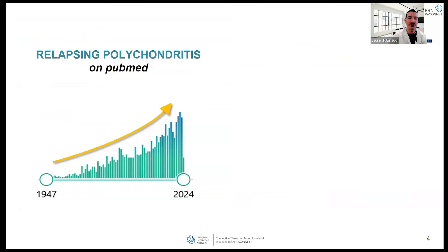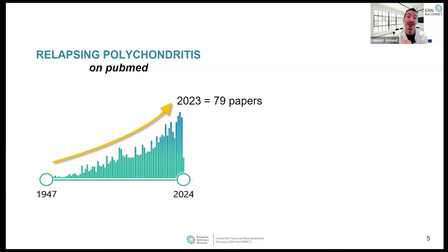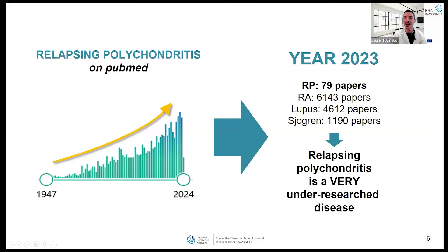Relapsing polychondritis is a very rare and very under-researched area. The number of publications on PubMed is increasing every year, but in 2023 it was just 79 papers — a very small number. In rheumatoid arthritis it's more than 6,000 papers per year, systemic lupus almost 6,000. So relapsing polychondritis is very much a rare and under-researched area.